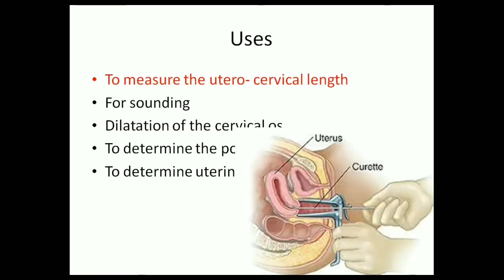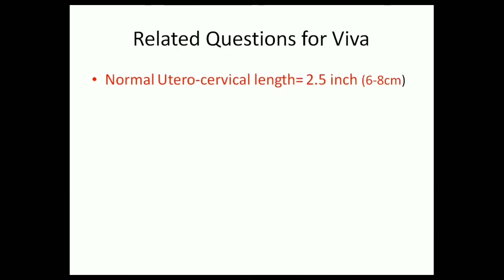If you get a uterine sound for your viva and you have mentioned that it is used to measure the uterocervical length, the examiner might ask you: what is the normal uterocervical length? The normal uterocervical length is 2.5 inches or 6 to 8 centimeters.